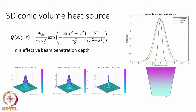The conical shape shows how the volumetric heat distribution is done: at the top it is wider and at the bottom it is narrower. Such a function can be used to capture how keyhole mode welding will show the heat transfer difference between the top and the bottom due to the heat source.